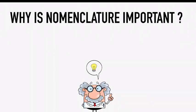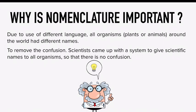Why is nomenclature important? Due to the use of different languages, all organisms around the world had different names. Every country and state has different languages, so every organism also had a different name in different languages. To remove this confusion, scientists came up with a system to give scientific names to all organisms so that there is no confusion.